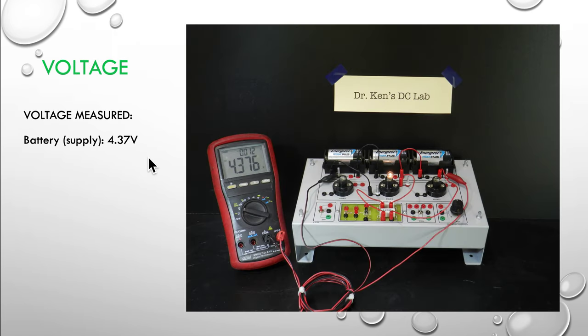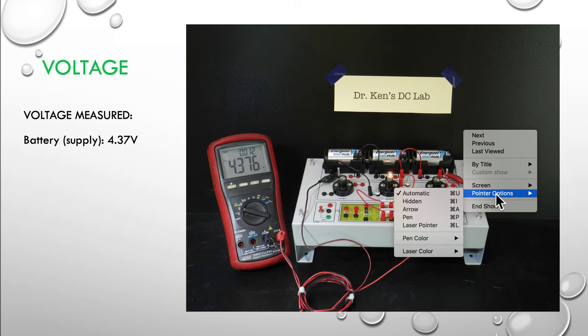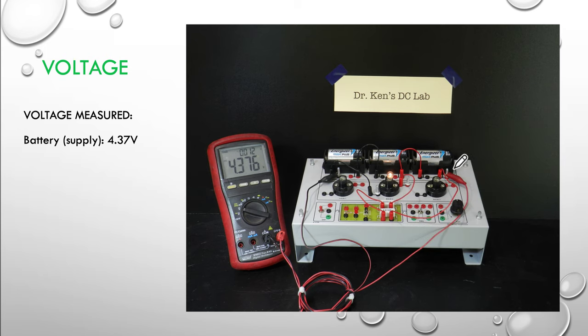Now we need to think about voltage, and again we're thinking about Kirchhoff's voltage laws. On this slide we're looking at 4.376 volts. We're just looking at the voltage across the supply, across the battery. You can see up here I'm on the plus side of the battery and on the minus side of the battery down here, so simply that's the applied voltage: 4.376.